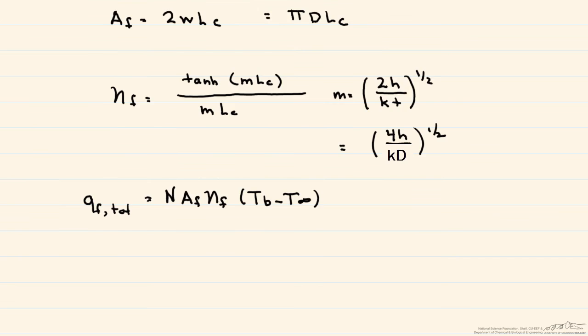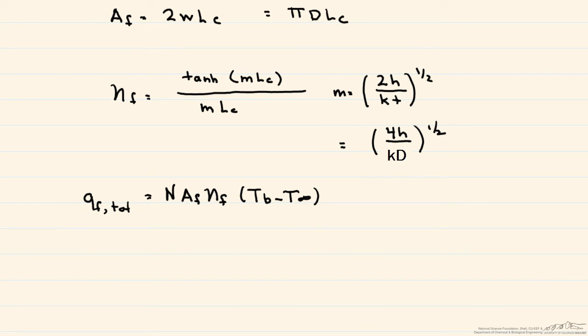So since that heat transfer mode is convection, we use Newton's law of cooling, which is the convective heat transfer coefficient times the exposed area of the base. And again, Tb minus T infinity. And one of the things that we assume when calculating heat transfer from an array of fins is that the H for the fin is the same as the H for the base.